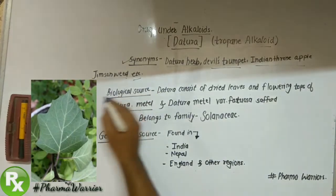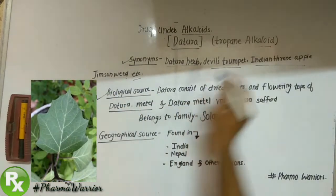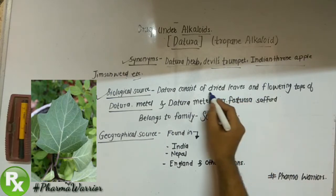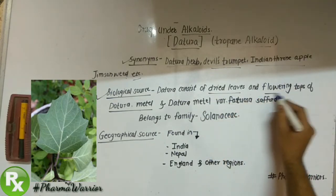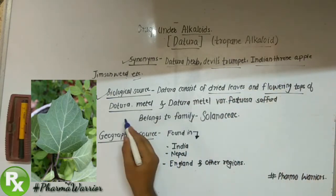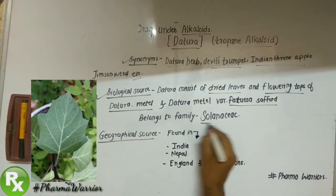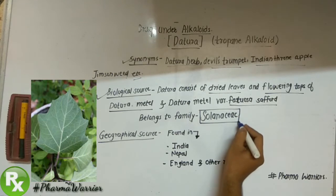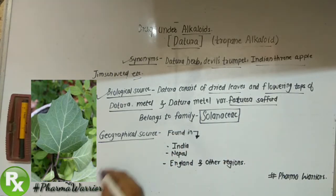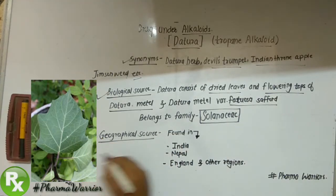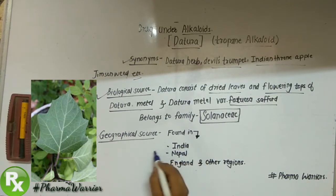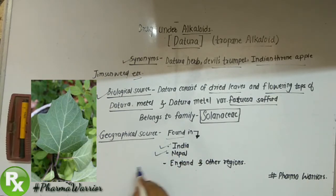The biological source: Dhatura consists of the dried leaves and flowering tops of Datura metel, belonging to the family Solanaceae. Regarding geographical source, it is found in India, Nepal, and other tropical or subtropical regions.